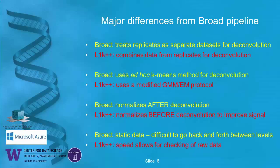The Broad treats their data in a static manner — the different levels are not easy to go back and forth between, largely because it takes a lot of work to get partial results during processing. With L1K++, it's really, really fast, so you can go back and check your raw data, get some intermediate results, look at some histograms. It's actually designed so that if you get a result later on and want to check whether it's reasonable from the original data, you can do this.